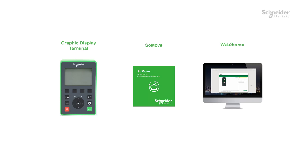Flow estimation may be set using the Graphic Display Terminal, SoMove Software, or the embedded ATV600 web server. In our example, we will use the Graphic Display Terminal.